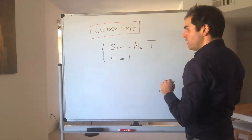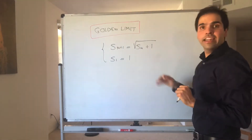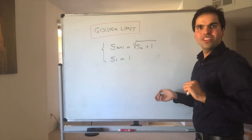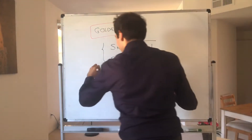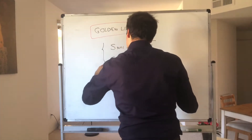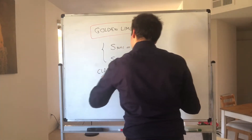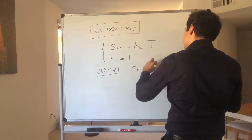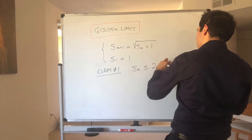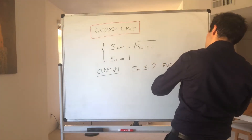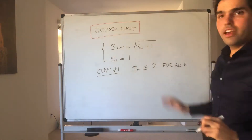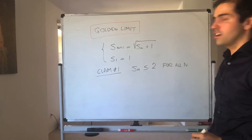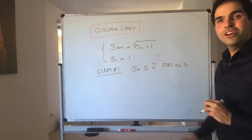First of all, one thing I want to show is that Sn is bounded above. In this case, it turns out it's bounded above by 2, and that's what we want to show. So claim number one: Sn is less than or equal to 2 for all n. It's best to prove this by induction — for recursive sequences, induction is usually the way to go.